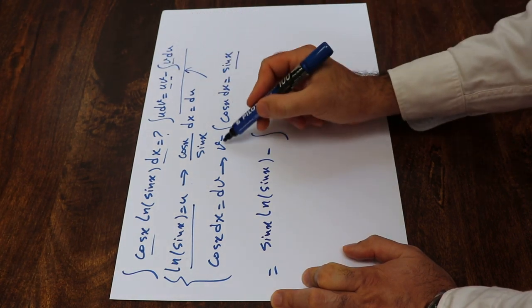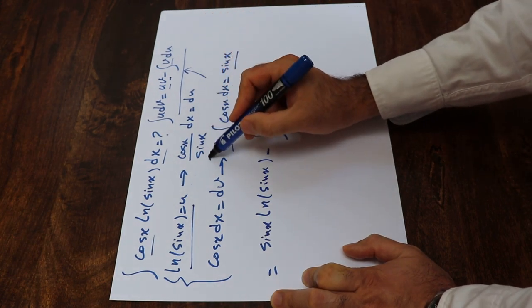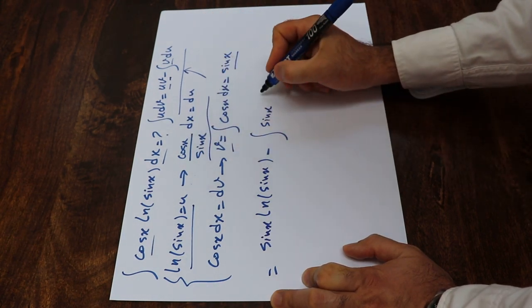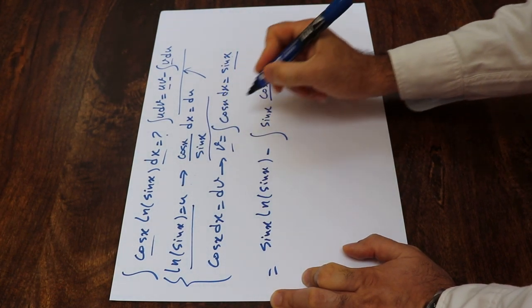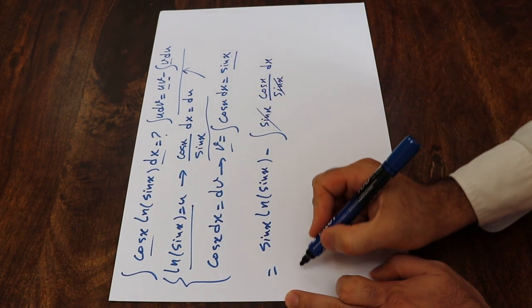That's the integral of sine x times du. And based on this equation, du is equal to cosine x divided by sine x dx. So here sine x cancels out.